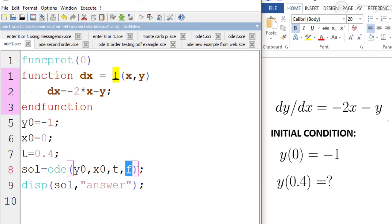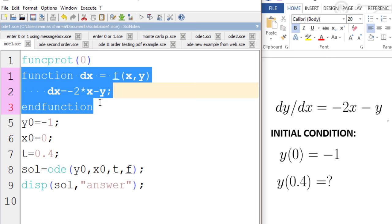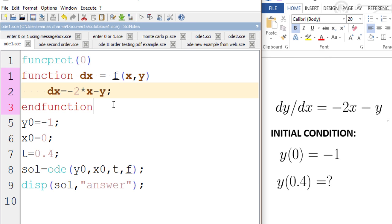Let's see how we define f. If you are familiar with Scilab then you must know how to define functions. Here is how you define a function: we name the function f and it takes up two arguments x, y. This is the syntax to define a function. You start with 'function' and end with 'endfunction'.